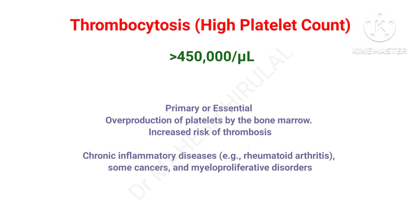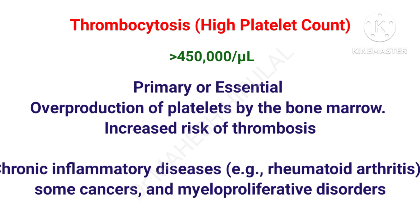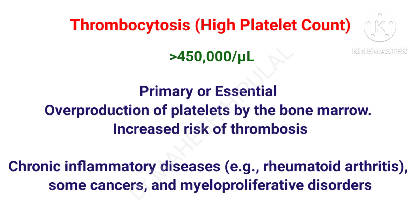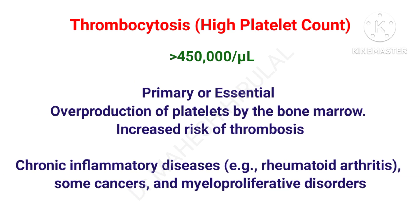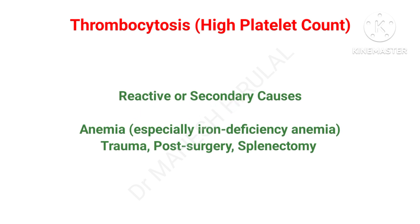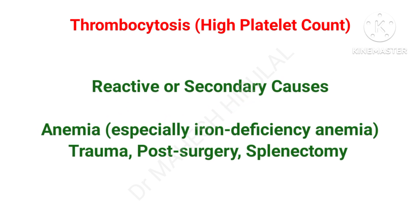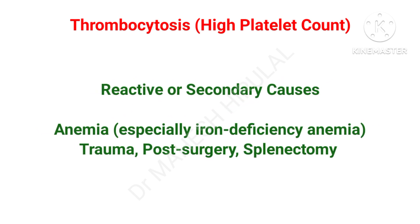Primary or essential thrombocytosis may be due to overproduction of platelets from the bone marrow, which may lead to thrombosis. Chronic inflammatory diseases like rheumatoid arthritis, some cancers, and myeloproliferative disorders may also lead to thrombocytosis. Reactive or secondary causes include iron deficiency anemia, trauma, post-surgery, and splenectomy.